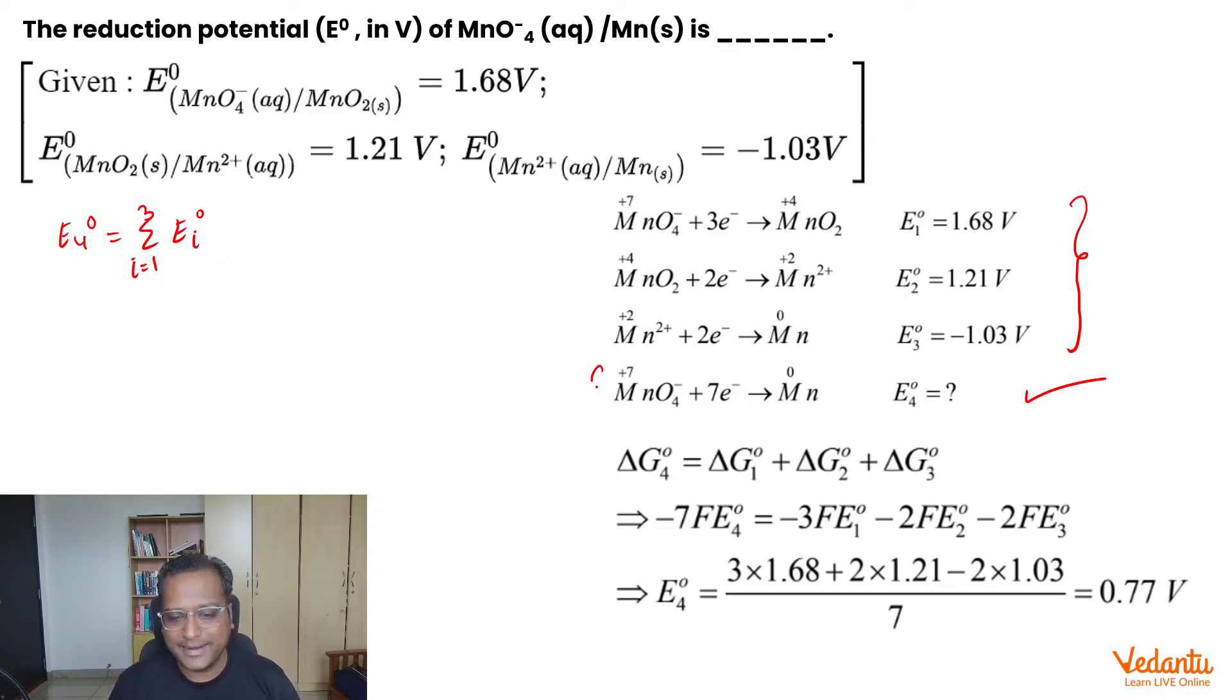Because the target reaction is a half cell. When the target reaction is a half cell, we have to go by the delta G way, by the extensive property way. So, we can clearly see that if you add these three reactions, the terms get cancelled out and you get your final reaction.